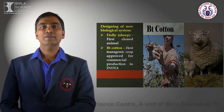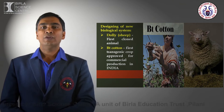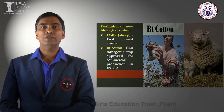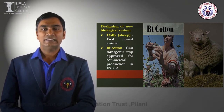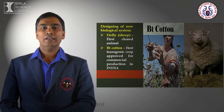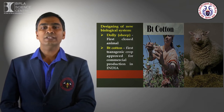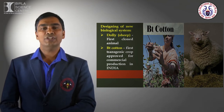A typical example of this category is Dolly the sheep — the first cloned animal on Earth. A second example is BT cotton, the first transgenic crop approved for commercial production in India.